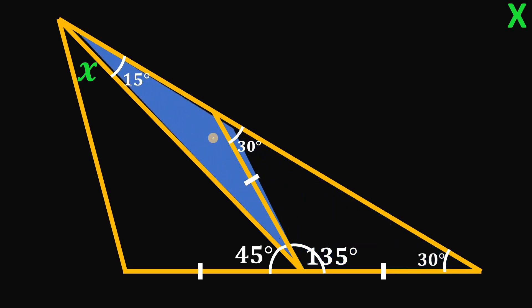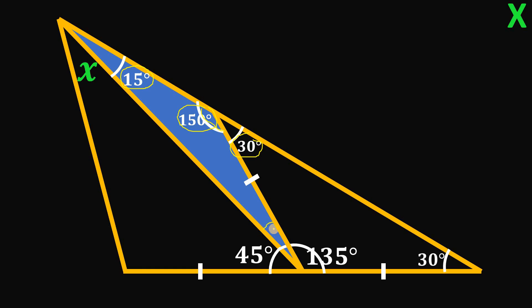Now let's focus on this triangle and use a linear pair: since this is 30 degrees, this angle must be 180 minus 30, which equals 150 degrees. The sum of interior angles must add up to 180 degrees — we have 15 degrees and 150 degrees, so this angle must also equal 15 degrees. Since we have the same base angles, this triangle must also be an isosceles triangle, so these two sides are equal.